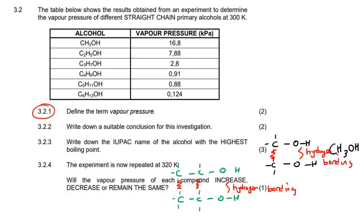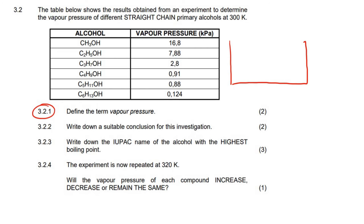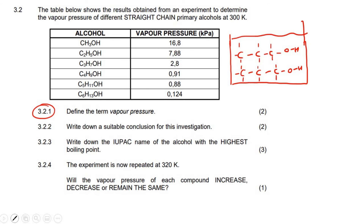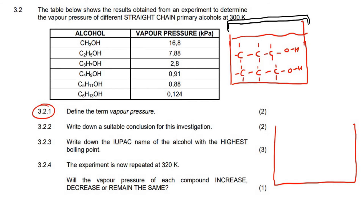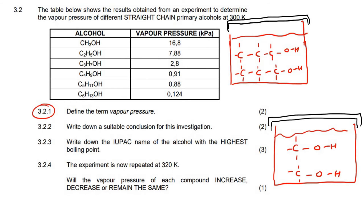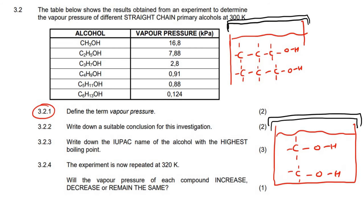If you then had a container filled with, say, C3H7OH — let's draw two of them, because that's what intermolecular forces are all about — with a lid on it. And then another little container filled with CH3OH, also with a lid. Think about the intermolecular forces inside each container — between those two molecules — and think about which ones are stronger.